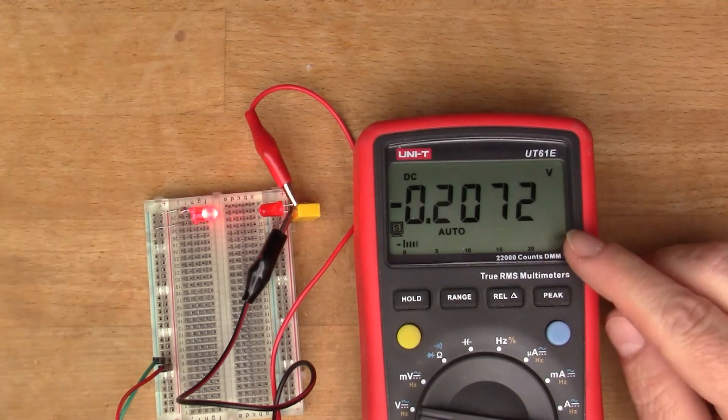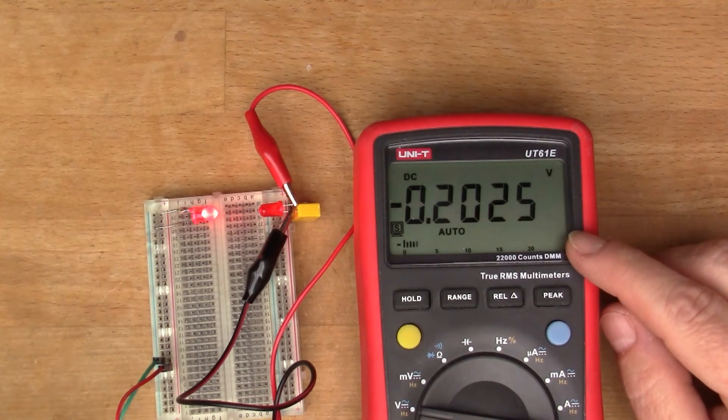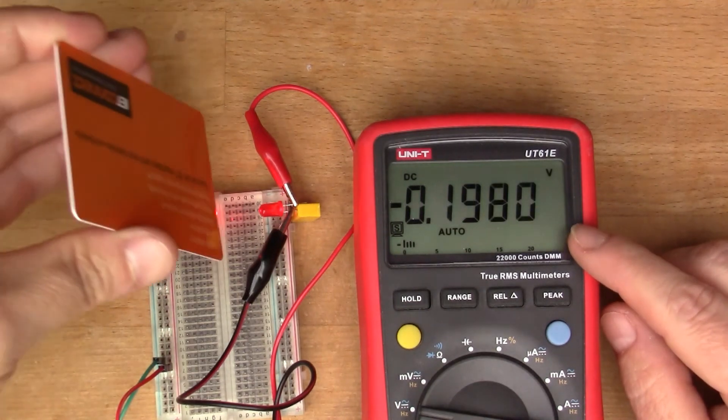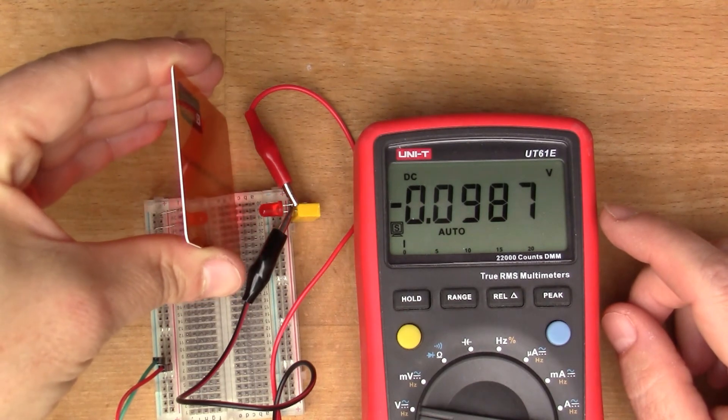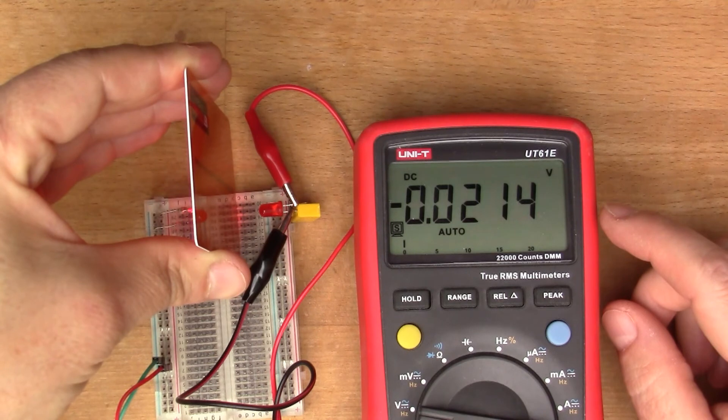Just connected across to the multimeter here which is reading voltage. So the voltage generated in the LED on the right at the moment is about 200 millivolts. And if I block the beam, see that drops down to about 20 millivolts there.